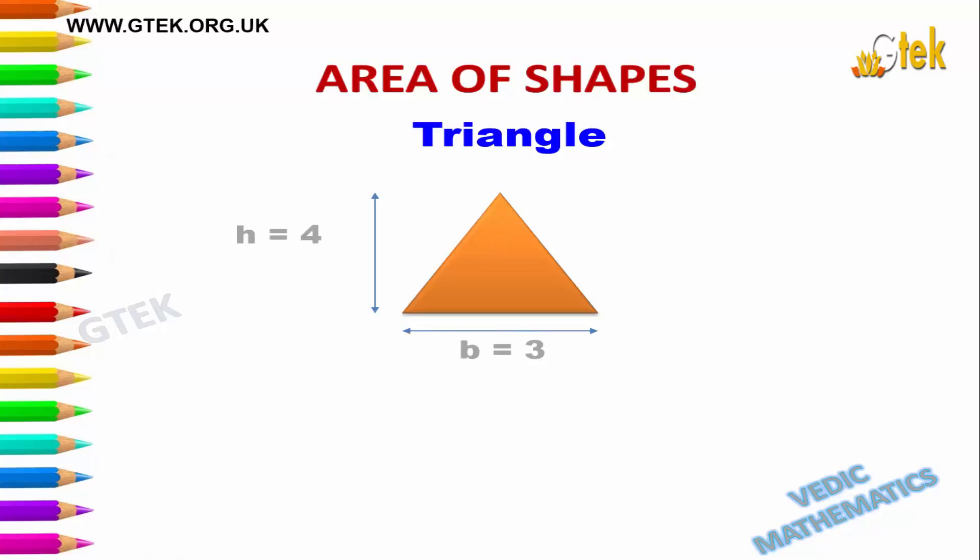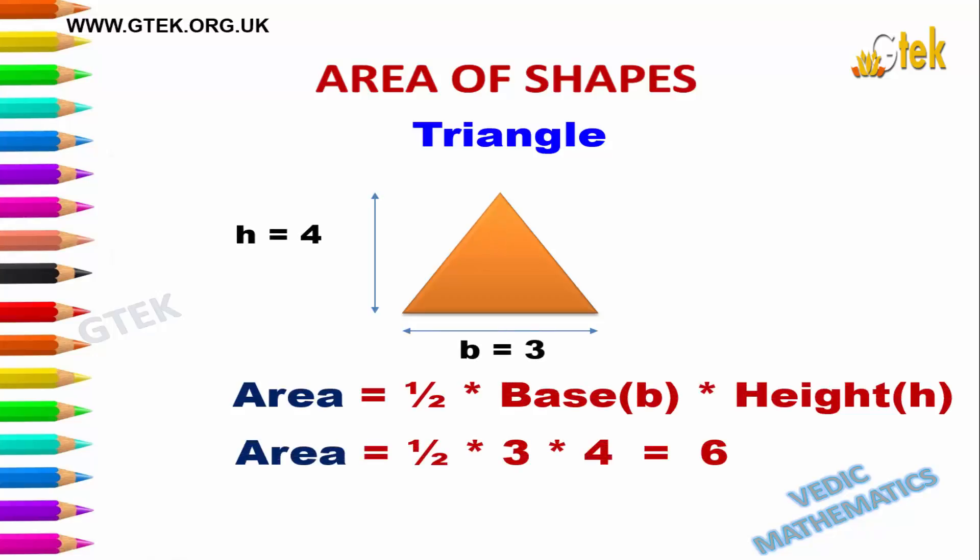Now comes the triangle. The triangle has a height of 4 and the base value as 3. The area of triangle is 1/2 into base into height. So it equals 1/2 into 3 into 4. The answer is 6.